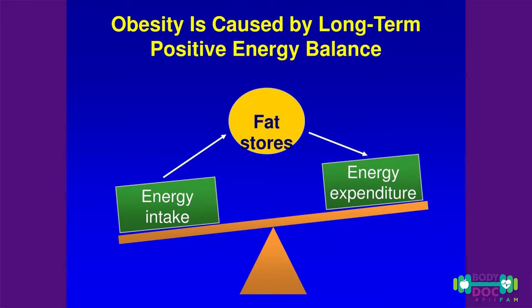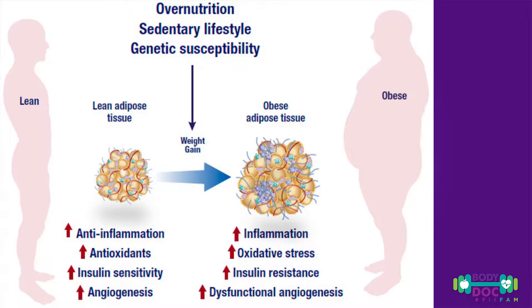The major reason behind obesity is positive energy balance, where you expend fewer calories than you consume and the excess is deposited as fat in your body. Obesity — having an increased amount of fat in your body — is a state of inflammation where you release immune proteins that cause you to develop diseases like heart disease.